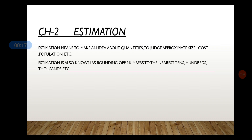Estimation means to make an idea about quantities, to judge the approximate size, cost, population, etc. For example, if I ask you what is your height, or what is the perimeter of your room, or the length of the table on which you are sitting, will you be able to give me the exact number? No. You might say approximately my height is 5 feet, or approximately the perimeter of my room is 50 meters. So when we do not know the exact number, we take the approximation of it. That is estimation.